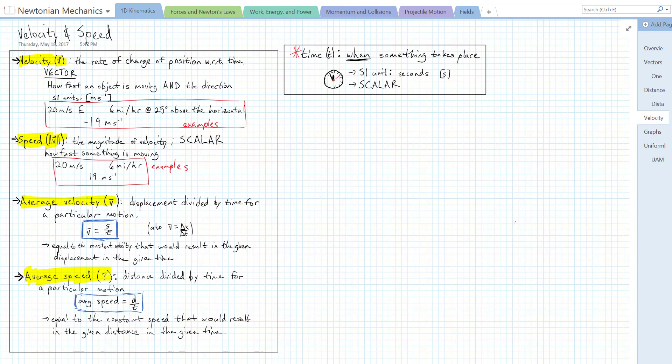You should already know about variables related to where something is: position, displacement, and distance. Velocity and speed tell us about how something is moving. So we're going to get into the physics definitions of all of these variables, but first we need to talk about another important variable, and that is time.